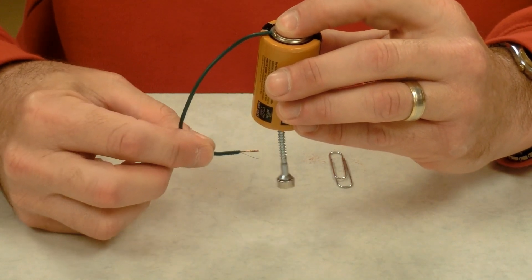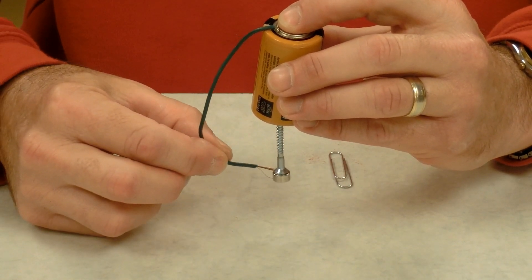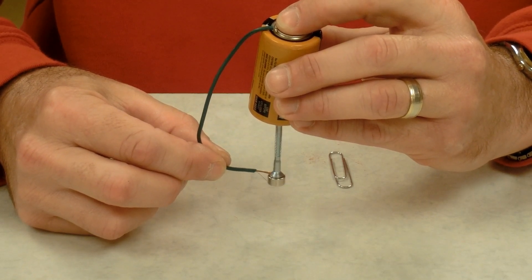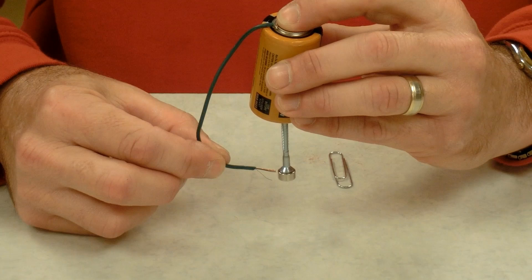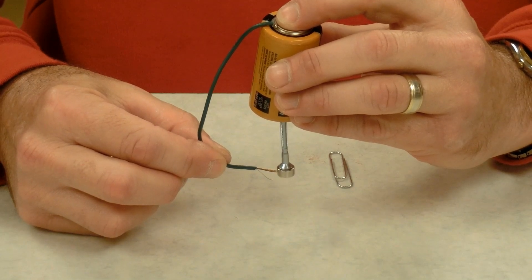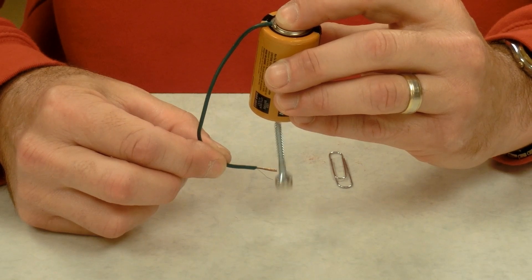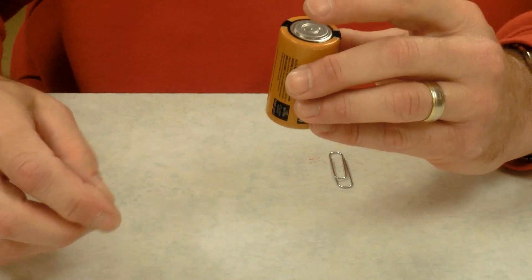When I do this the screw and magnet should start spinning and they are, and they're spinning really really fast. It'll spin several thousand RPMs and it's spinning clockwise right now. You can hear it and you can see it.